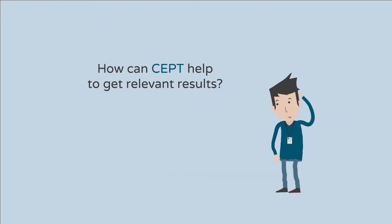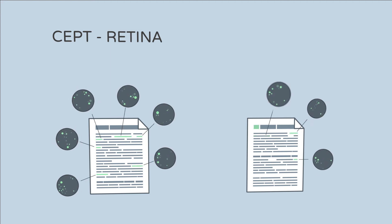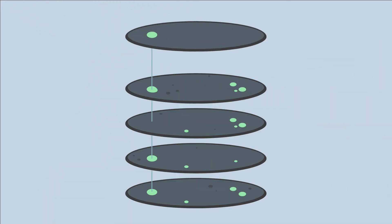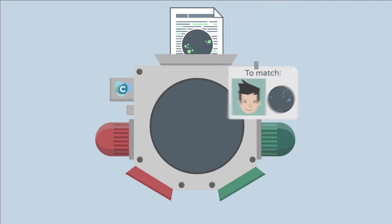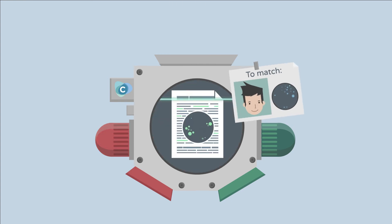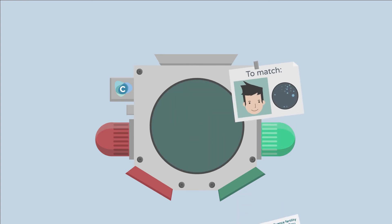So, how can SEPT help? Applied to the news feed subscribed to by Michael, the SEPT system will generate the fingerprints of every word contained in every single article, merge them into a single compound fingerprint for each article, and compare every article fingerprint with a filter fingerprint representing Michael's interests.